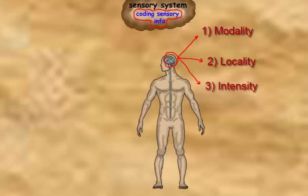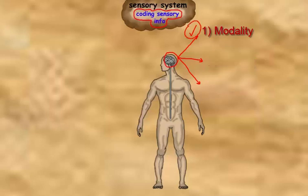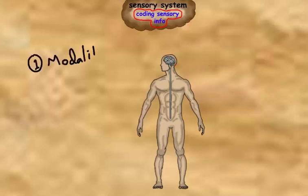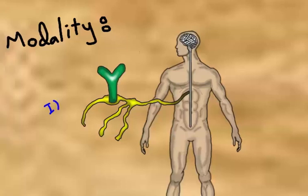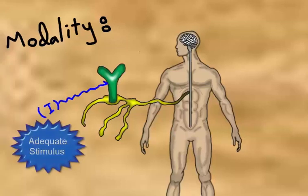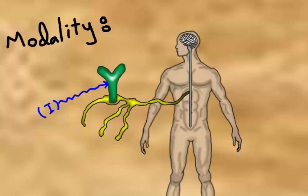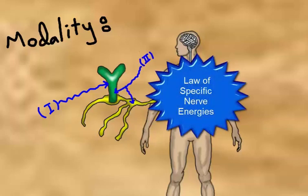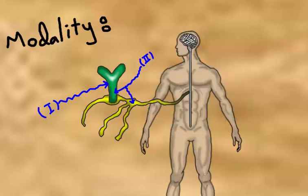Now let's look at how the sensory cortex is able to identify the type or modality of sensation. First, for every receptor there is a specific or adequate stimulus that the receptor is most sensitive to. Second, regardless of the method of stimulation, a receptor or its pathway, when stimulated, will give rise to one type of sensation — this is called the law of specific nerve energies.